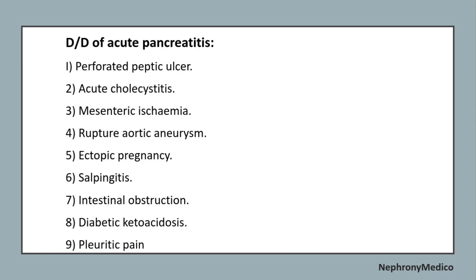Differential diagnosis of acute pancreatitis includes perforated peptic ulcer, acute cholecystitis, mesenteric ischemia, ruptured aortic aneurysm, ectopic pregnancy and salpingitis, intestinal obstruction, diabetic ketoacidosis, and pleuritic pain.